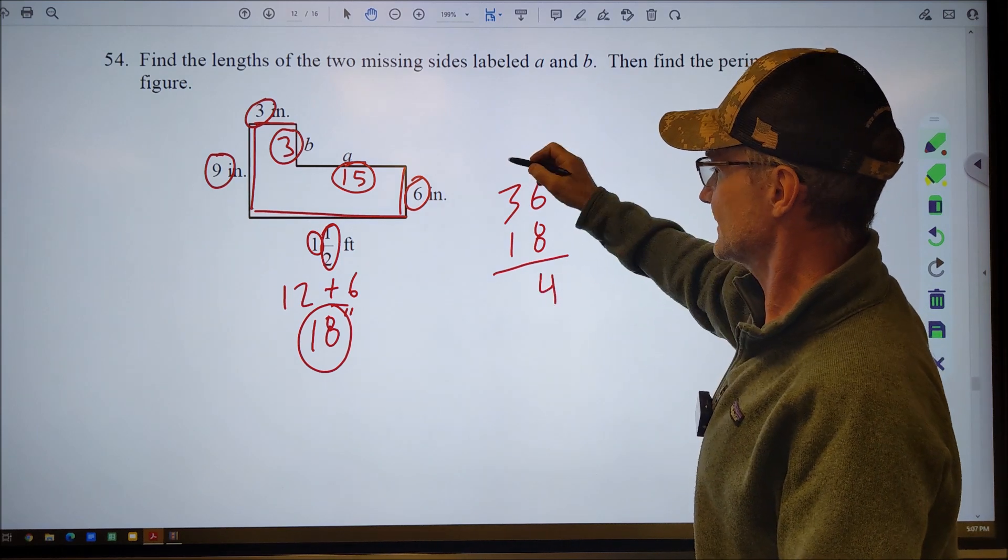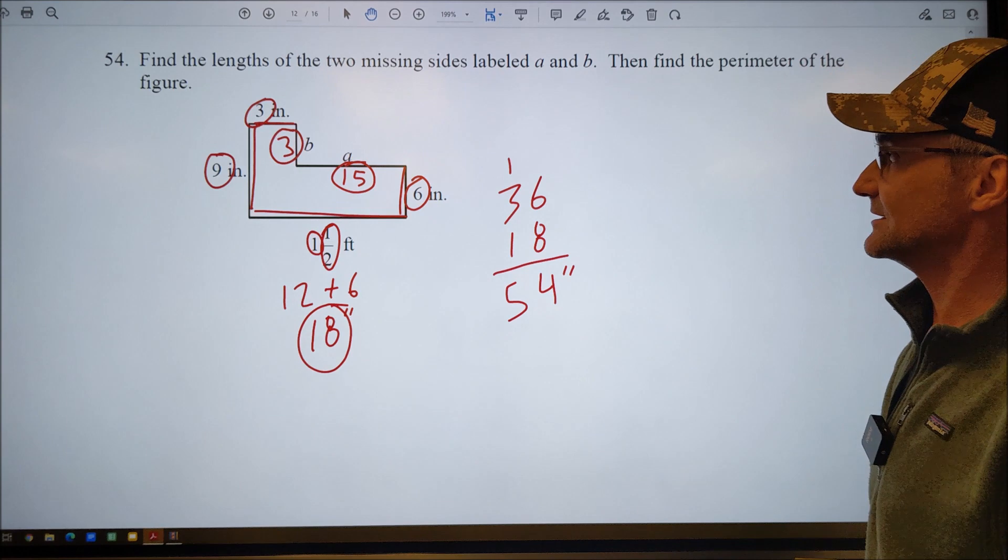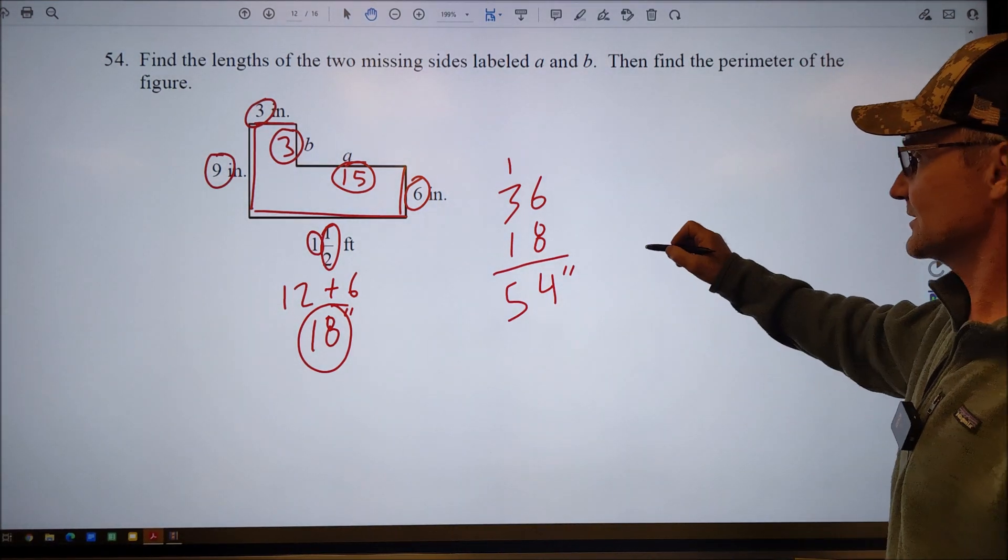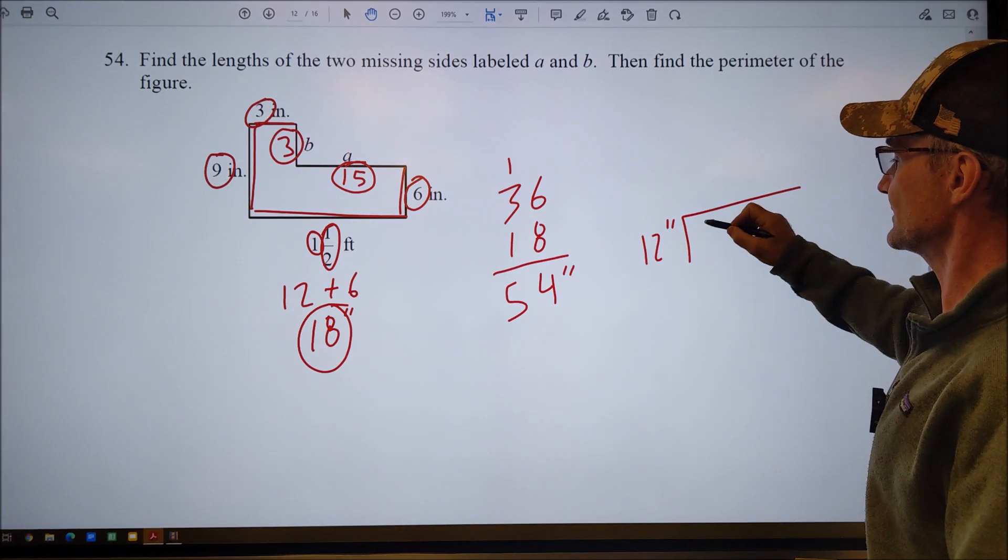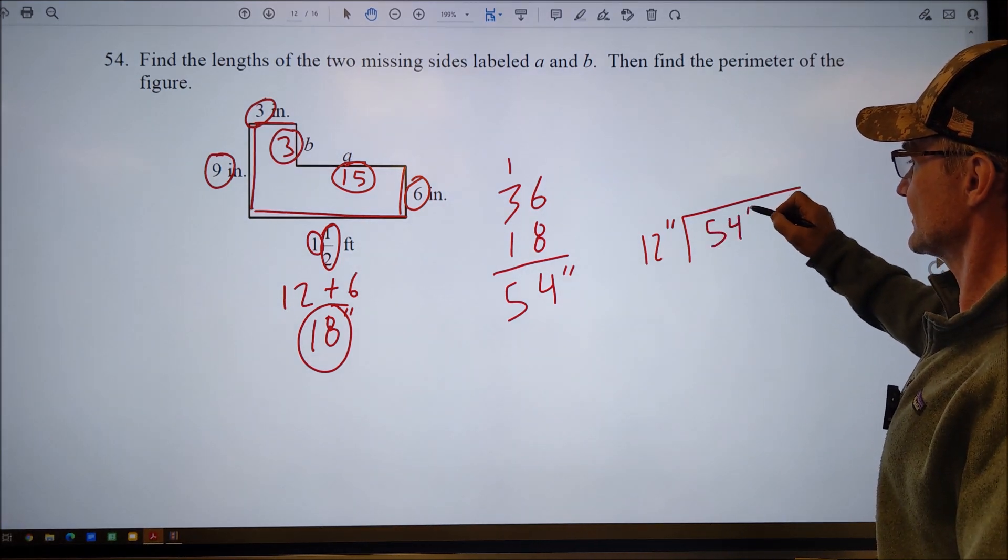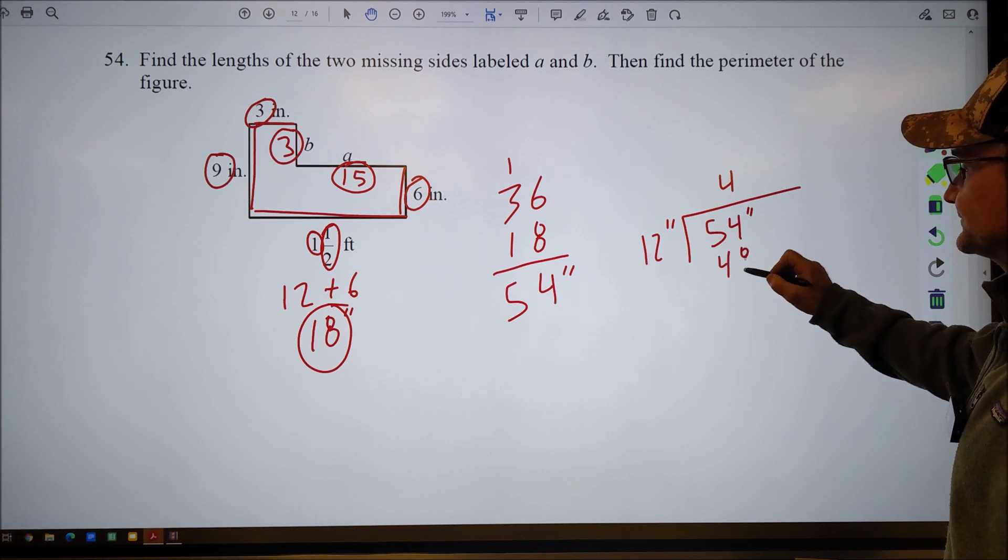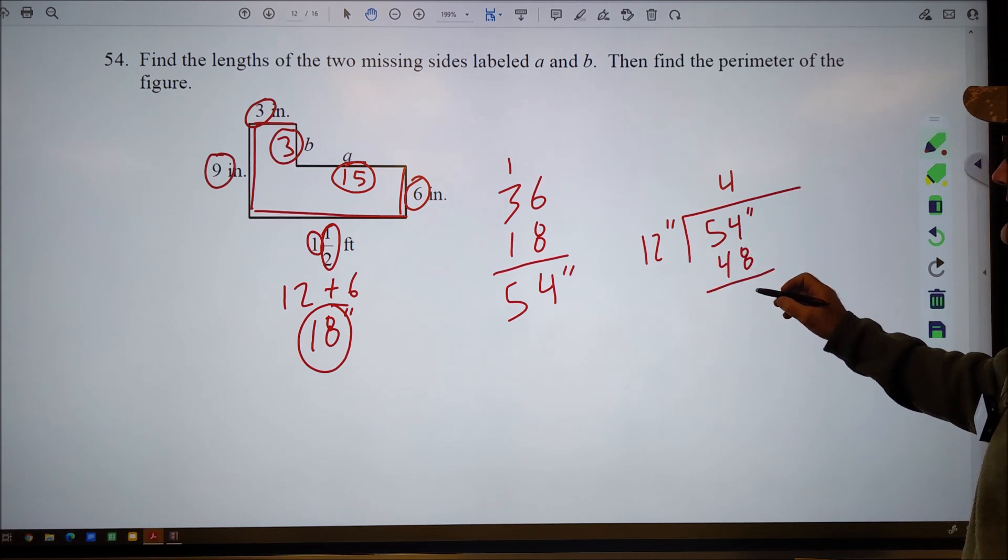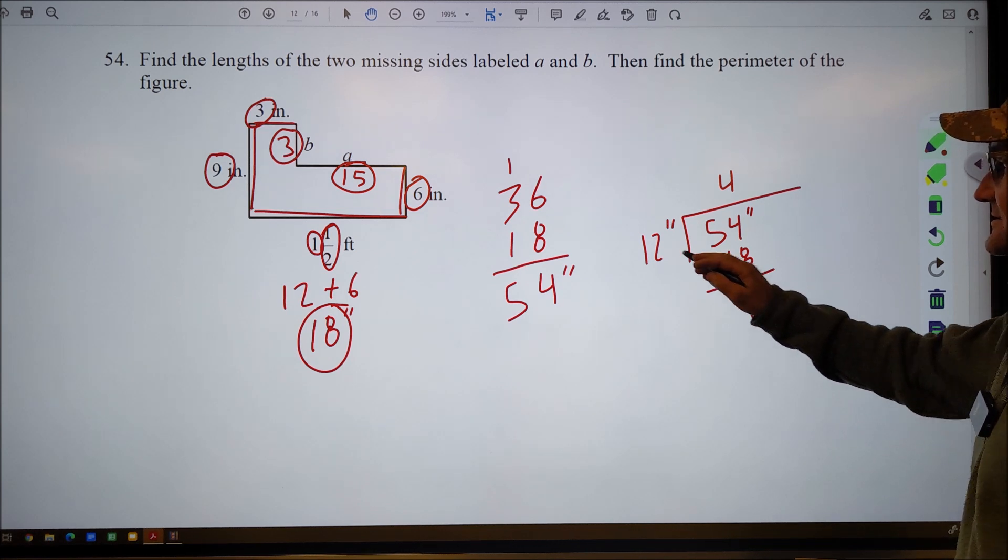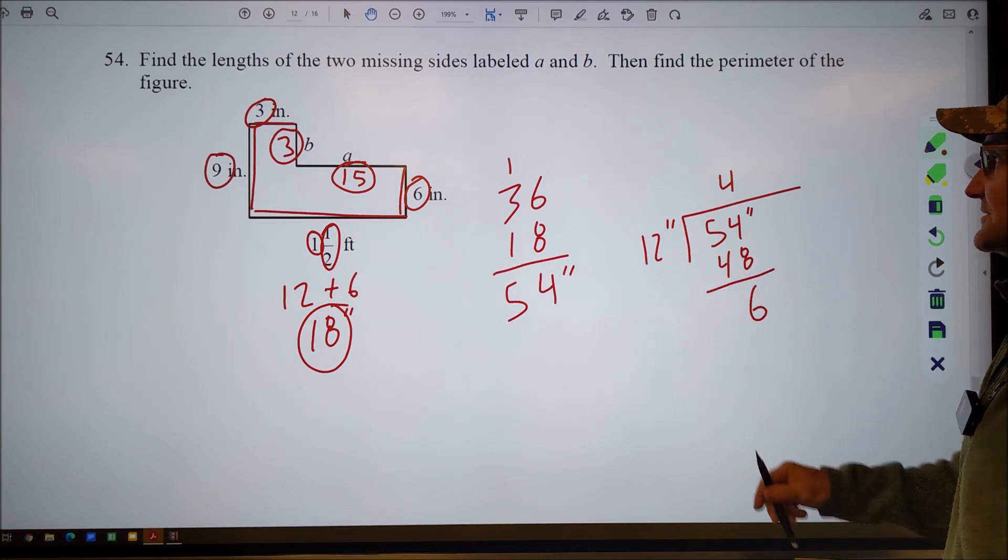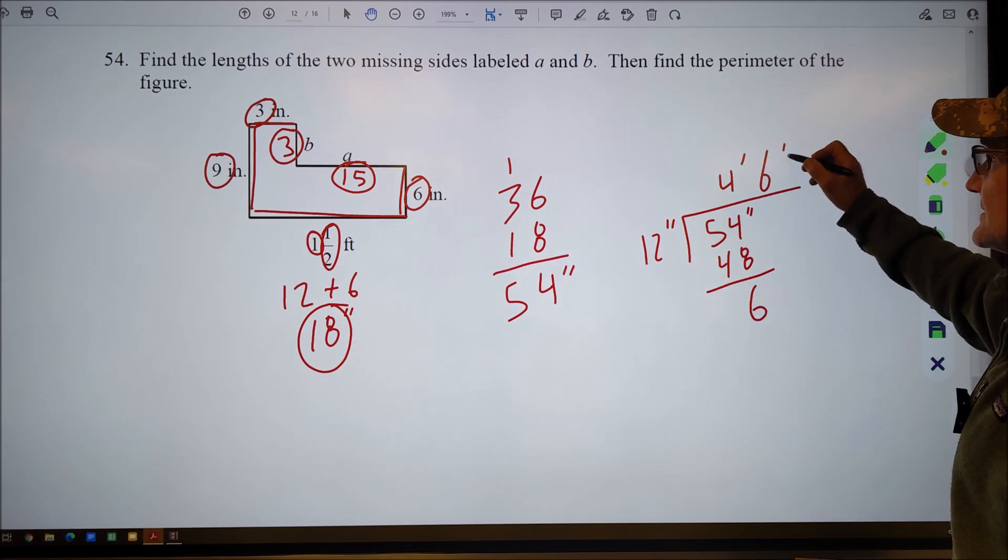8 and 6 is 14. Carry the one to get 54 inches. And that's your answer right there. If you did want feet, you could do 12 inches into 54 inches. It'll go in there four times to give you 48. 54 minus 48 is six. And that'll be a remainder of six over 12, six inches over 12 inches, four and a half feet or four feet, six inches.